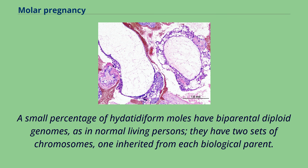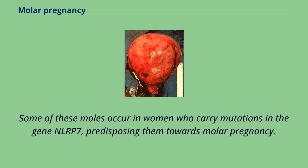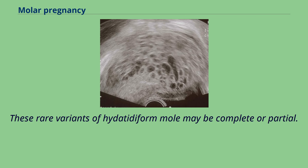A small percentage of hydatidiform moles have biparental diploid genomes; as in normal living persons, they have two sets of chromosomes, one inherited from each biological parent. Some of these moles occur in women who carry mutations in the gene NLRP7, predisposing them towards molar pregnancy. These rare variants of hydatidiform mole may be complete or partial.